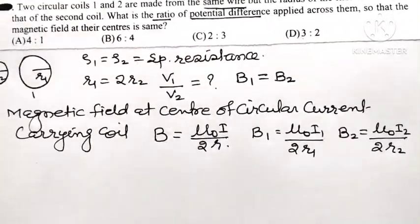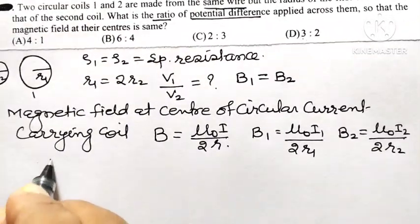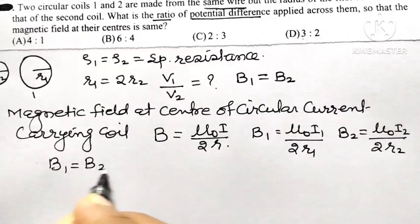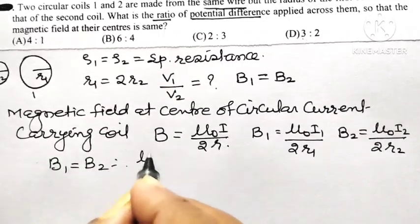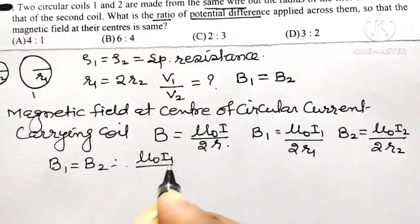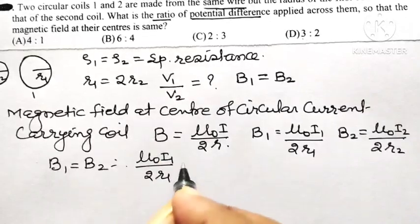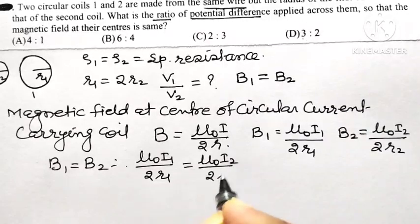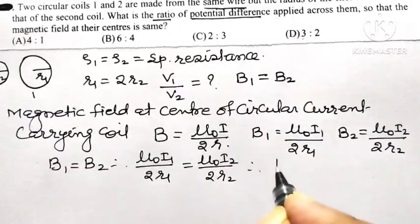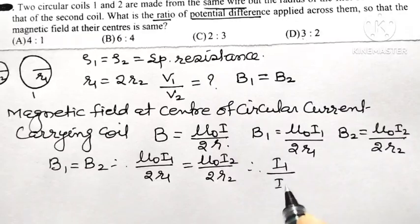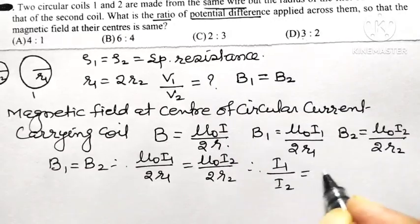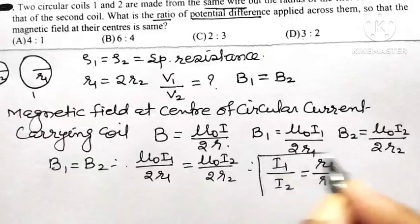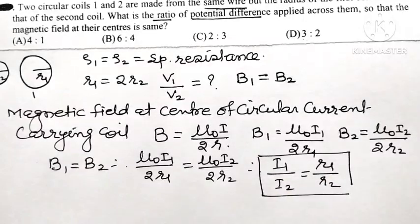We are given that B1 = B2. This means μ₀I1 / 2R1 = μ₀I2 / 2R2, which simplifies to I1 / I2 = R1 / R2.